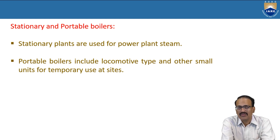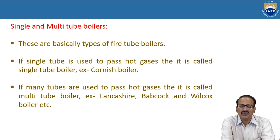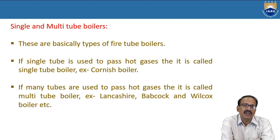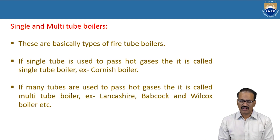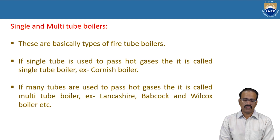Single and multi-tube boilers: if only one pipe is used, it is a single tube boiler; if more than one pipe is used, it is a multi-tube boiler. An example of a single tube boiler is the Cornish boiler. Generally we use multi-tubes because we want more efficiency and more steam production. Examples for multi-tube boilers are Lancashire, Babcock, and Wilcox boilers.